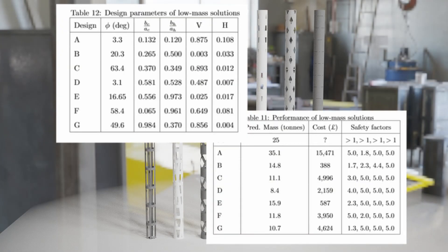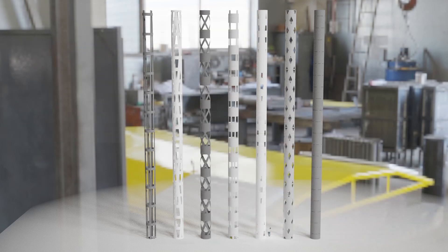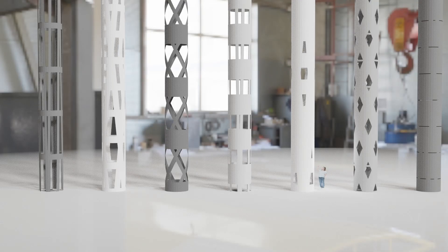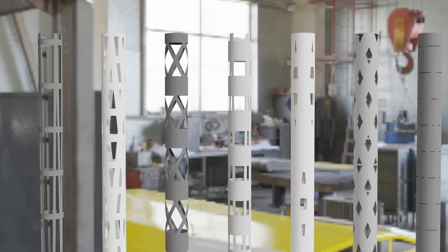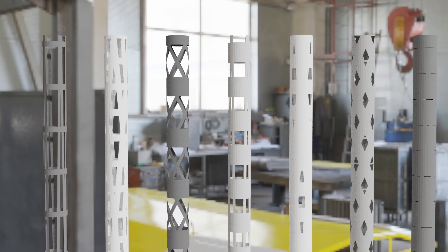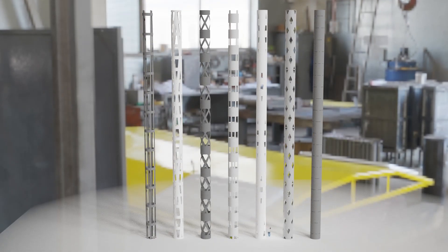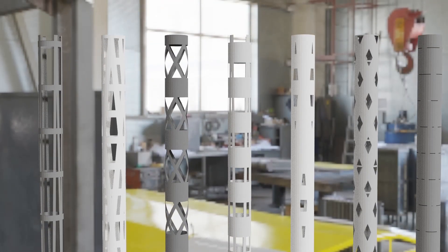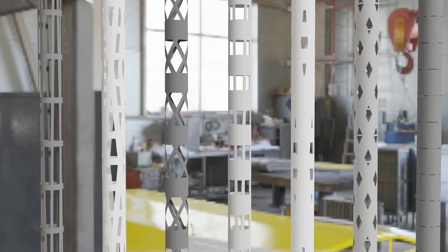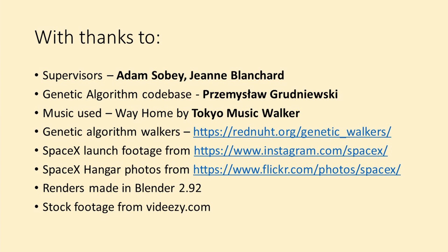I filtered the set of results that would successfully pass each structure requirement for those with masses less than the Falcon 9 first stage, resulting in 7 designs labelled A through G. You can see them in this render arranged from left to right, starting with A. Taking into account the skin, tanks, and engines included on the first stage, I am confident these designs still save mass on SpaceX's design, but labour cost and manufacturing is still a concern. I would primarily like to thank my supervisors Adam Sobey and Jean Blanchard for helping me with this work.